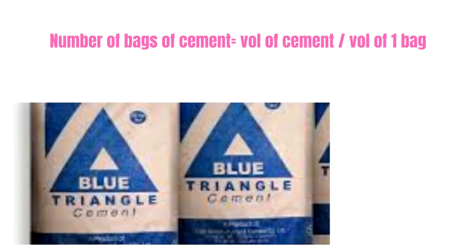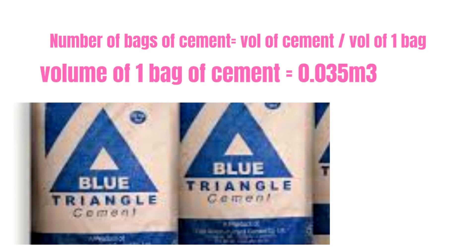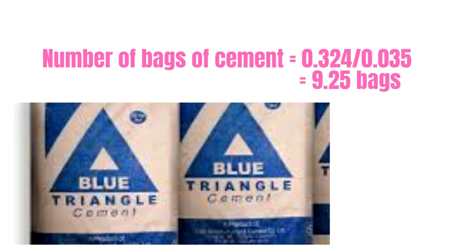The number of cement bags required will be the volume of cement divided by the volume of one bag of cement. A bag of cement is sold in 50 kilograms and the volume of each bag is 0.035 cubic meters. Therefore the number of bags required is 0.324 divided by 0.035, which equals 9.25 bags — hence we require 10 bags.